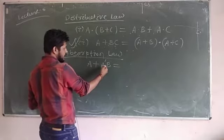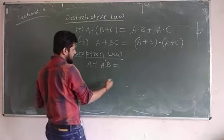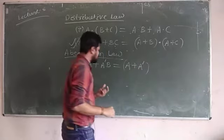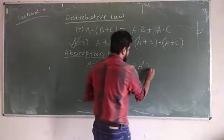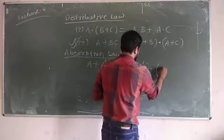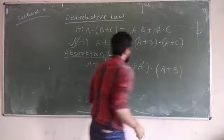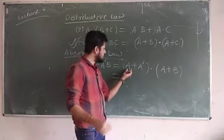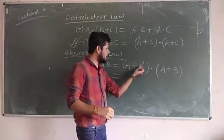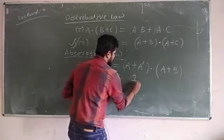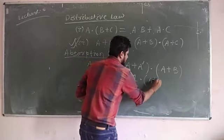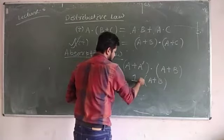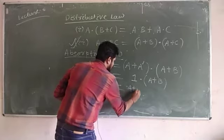Similarly, in place of B here it is A complement. So applying the distributive law: A OR A complement, and A OR B. From the OR gate we know that A OR A complement is always equal to 1. So we have 1 AND (A OR B), and AND with 1 is always equal to A OR B.